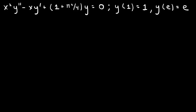Let's consider the Cauchy-Euler equation: x squared y double prime minus x y prime plus (1 plus pi squared over 4) y equals 0, with boundary conditions at two points, y of 1 equals 1 and y of e equals e. This is a Cauchy-Euler equation because the y double prime term is multiplied by x squared, the y prime by x, and the y by a constant.